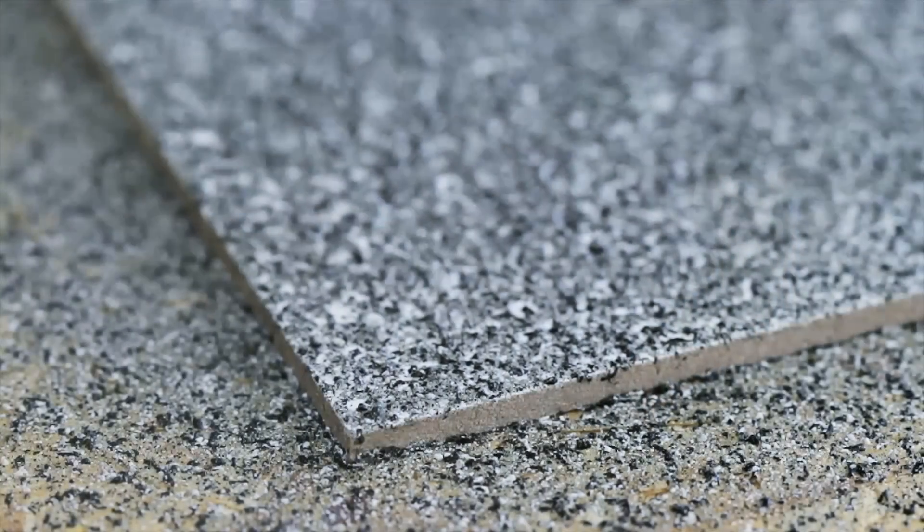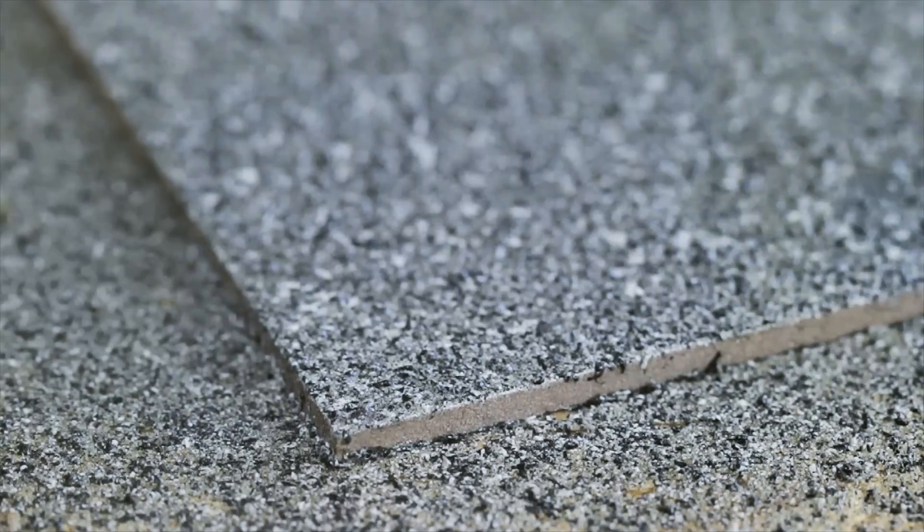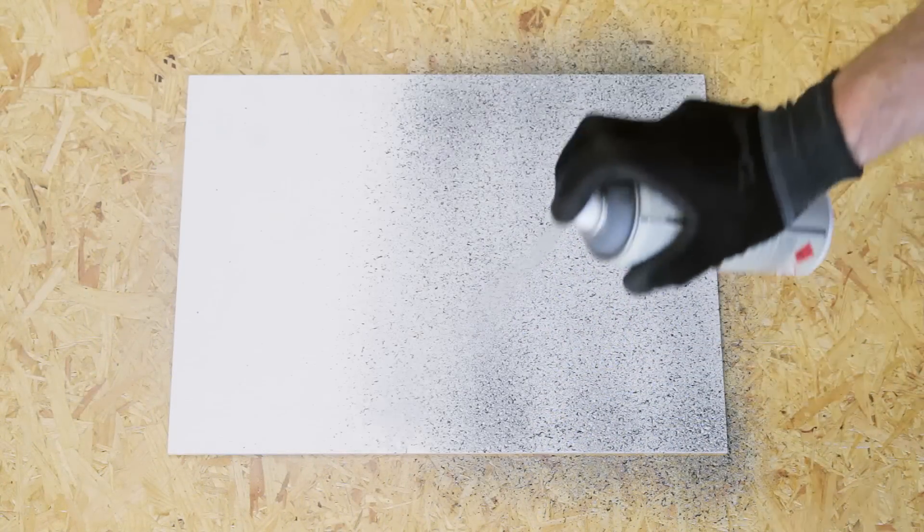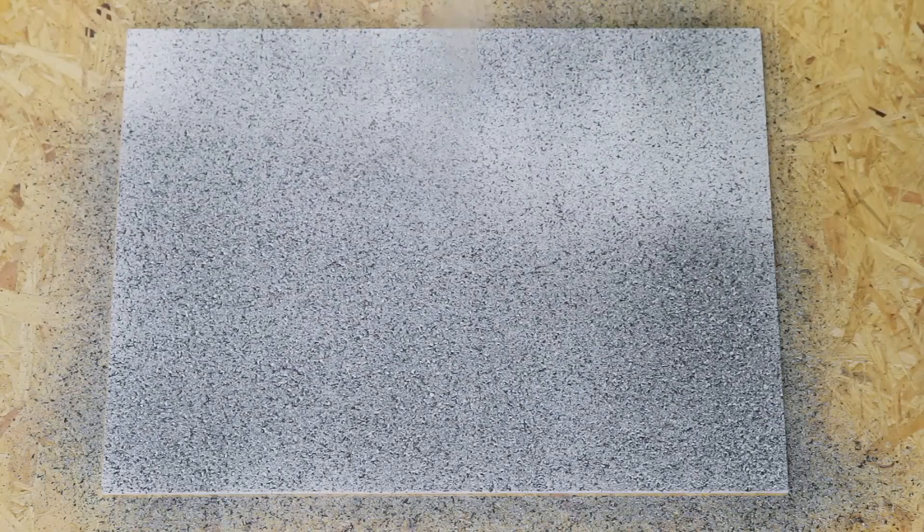When applying brighter color tones on dark grounds, prior priming is recommended. Apply one or more thin even layers. Allow minimum four to five minutes drying time between coats.